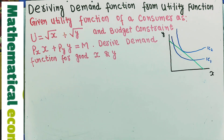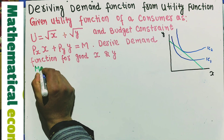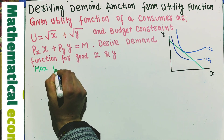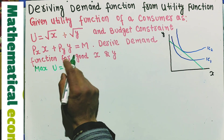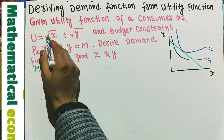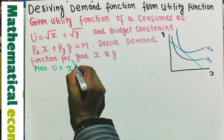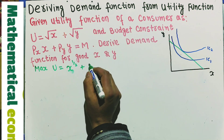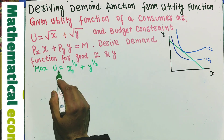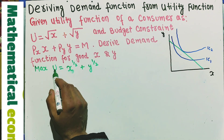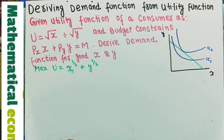This means we have a maximization problem: we want to maximize the utility of the consumer, which is given as U = x^(1/2) + y^(1/2). The consumer wants to maximize this satisfaction or utility given the budget constraint.